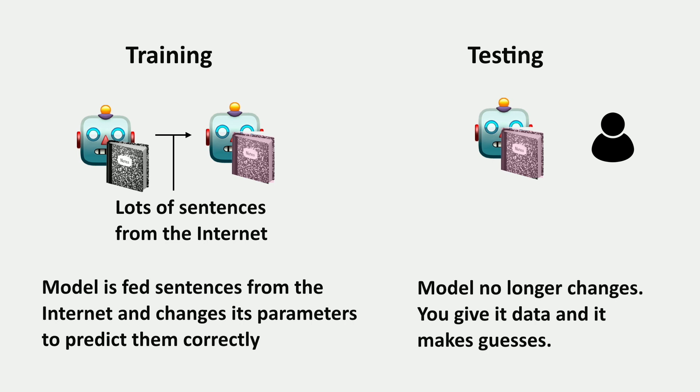In machine learning, we think of there being a training phase and a testing phase. Testing is like when you go on ChatGPT and interact with it — you give it an input, it gives you an output, and it doesn't actually get updated based on what you tell it. Even if there's a thumbs up button and you click it, it doesn't immediately change. Over time, the creators may decide to take that data and retrain it, but that doesn't happen immediately.